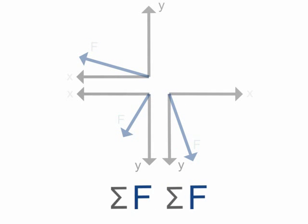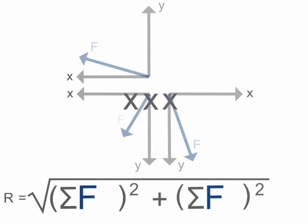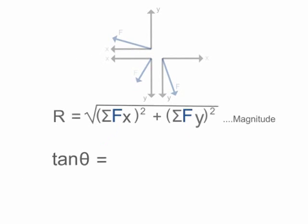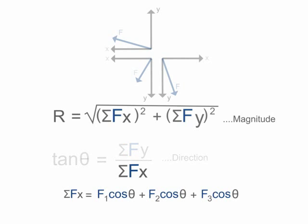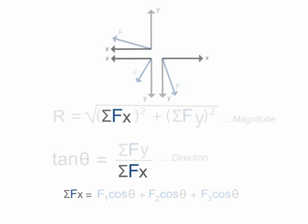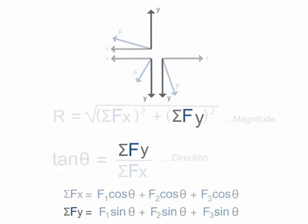The resultant magnitude R equals the square root of (ΣFx)² plus (ΣFy)², and the direction of the resultant force is tan θ equals ΣFy over ΣFx. Here, summation of Fx is algebraic sum of all x components of all the forces, and Fy is algebraic sum of all y components of all the forces.